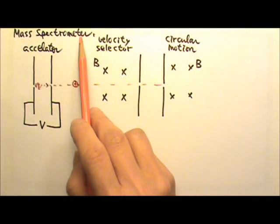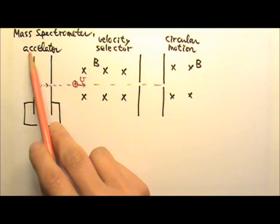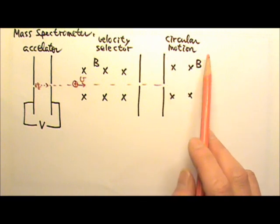We've talked about the mass spectrometers. A mass spectrometer may include three parts: the accelerator, velocity selector, and the circular motion part.